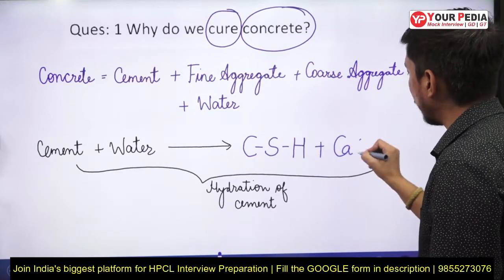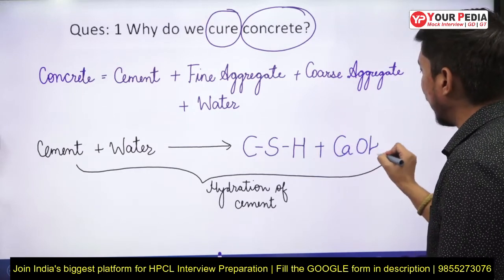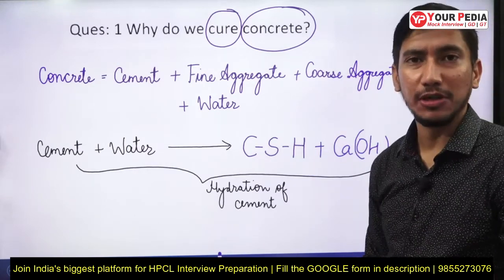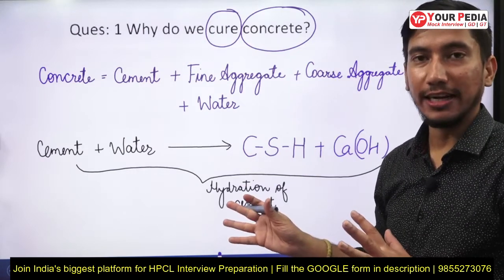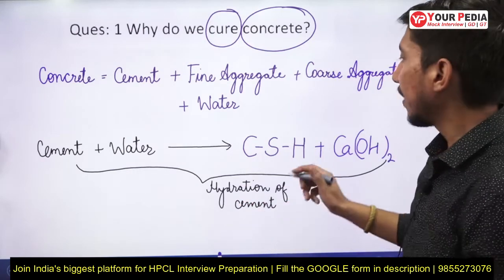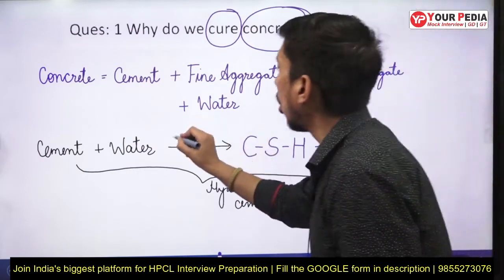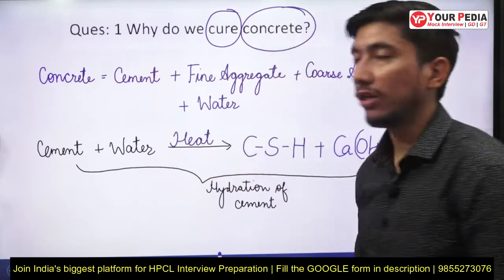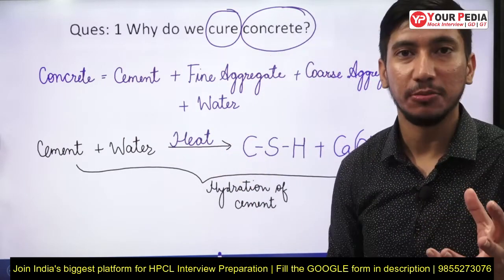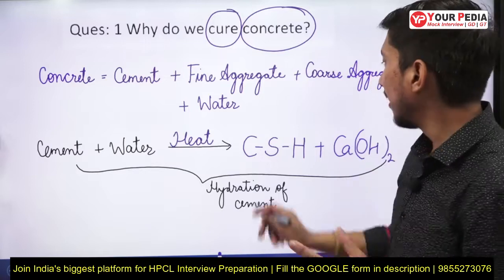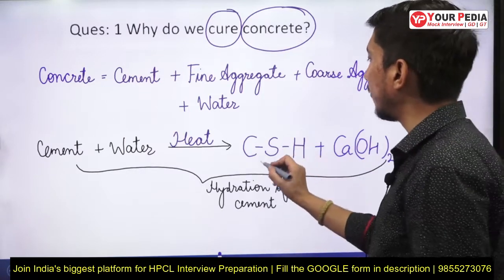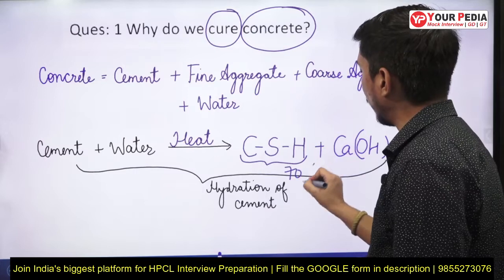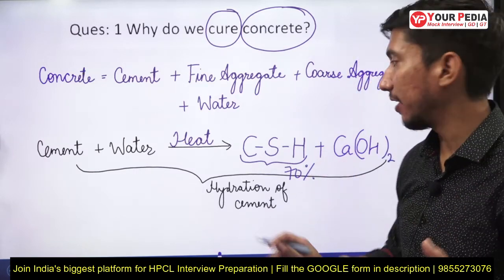The reaction also forms calcium hydroxide, which is an undesirable compound, but it is formed nonetheless. Additionally, a lot of heat is evolved in this reaction — it is a highly exothermic reaction.